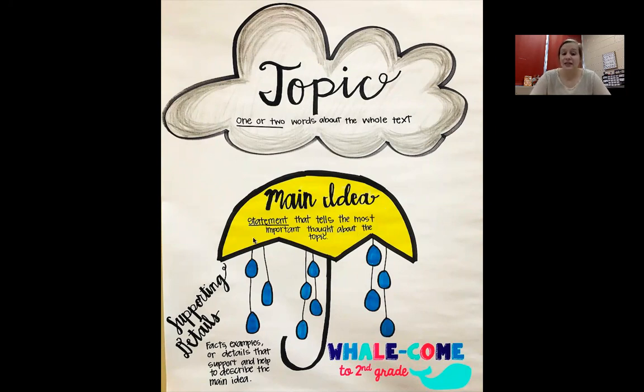Then lastly you can see our raindrops coming off of the main idea. Those represent our supporting details. They're facts, examples, or specific details that support and help to describe the main idea. So you start out at the rain cloud and you go from broad to really specific all the way down to the raindrops.